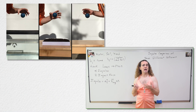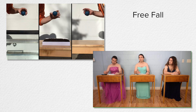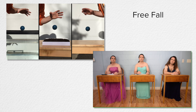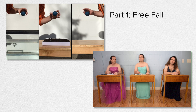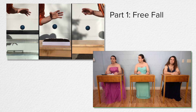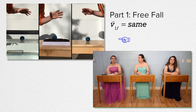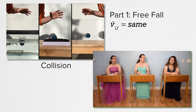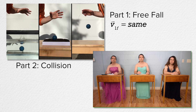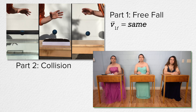Let's look at the different parts of the demonstrations. There is the freefall portion — part one — from the moment you let go of the ball to right before it strikes each substance. Each time the ball is dropped it starts from the same height, so the final velocity for part one in each demonstration is the same. Right after part one, the ball collides with each substance — that is part two — and the initial velocity for part two is the same as the final velocity for part one; therefore the initial velocity for part two for every substance is the same.